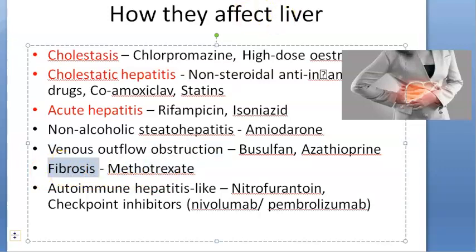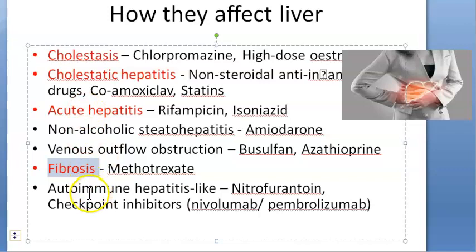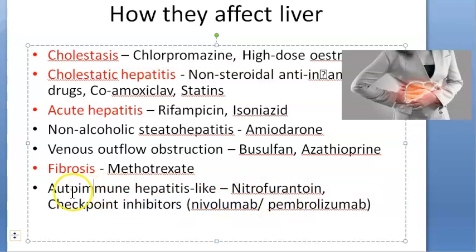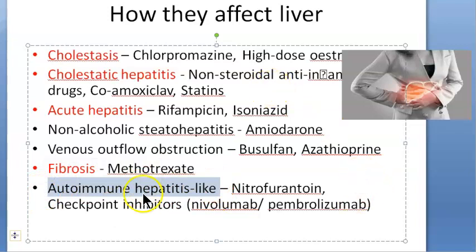Methotrexate will cause fibrosis — this is important to know. There are devices available to measure liver fibrosis, and if you are giving methotrexate to a patient, you should check for liver fibrosis. Nitrofurantoin and checkpoint inhibitors like nivolumab cause autoimmune hepatitis — an autoimmune hepatitis-like situation, which makes sense given that these are immunotherapy antibodies.